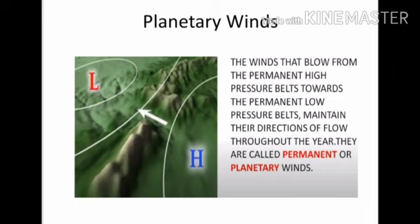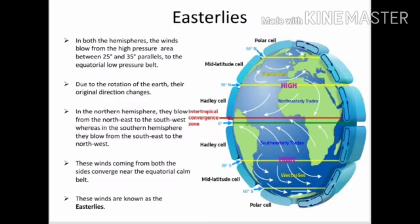Types of planetary winds are the easterlies, the westerlies, and the polar winds. What are easterlies? In both hemispheres, winds blow from the high pressure area between 25 and 35 degrees parallels towards the equatorial low pressure belt. Due to the rotation of the earth, their original direction changes. In the Northern Hemisphere, they blow from the northeast to the southwest, whereas in the Southern Hemisphere, they blow from the southeast to the northwest. These winds converging near the equatorial calm belt are known as the Easterlies.